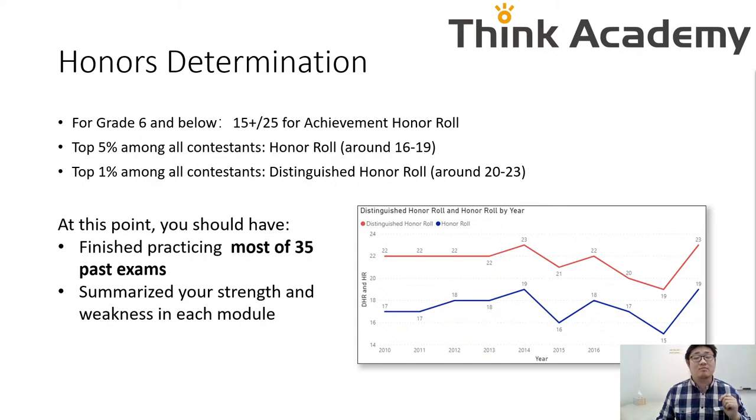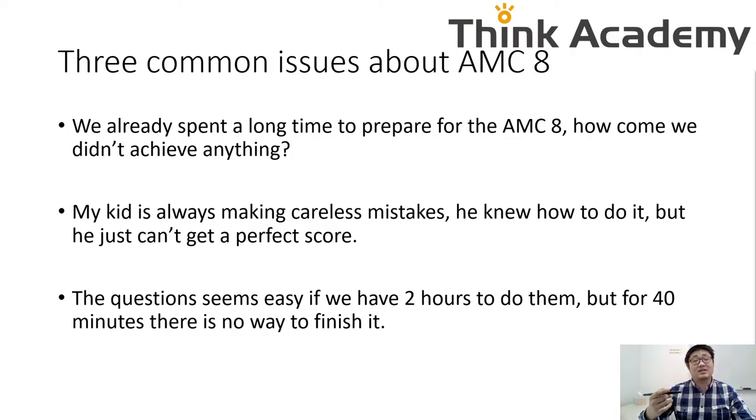I also received some questions about three common issues kids have with AMC 8. First, we already spent a long time with high time commitment—hours preparing for AMC 8. How come we still didn't achieve anything, meaning didn't get into top 5%? Second, my kid is always making careless mistakes. He knew how to do it, but cannot get a perfect score on the first 20 questions. No one is guaranteed to get perfect on all 25 questions because of the last five, but the first 20, I believe everyone should get those right. If you're making careless mistakes, that's very unfortunate.